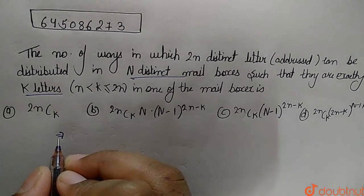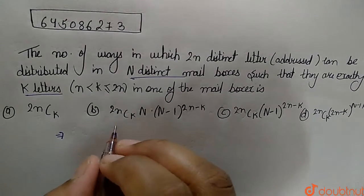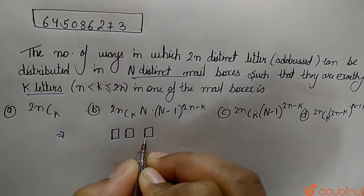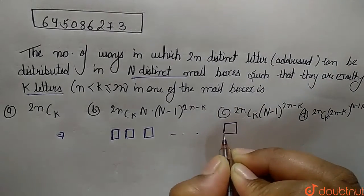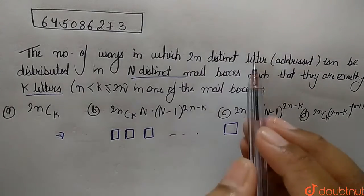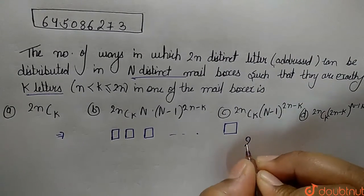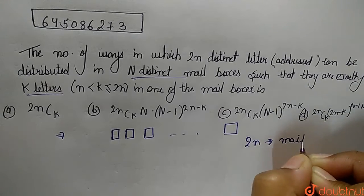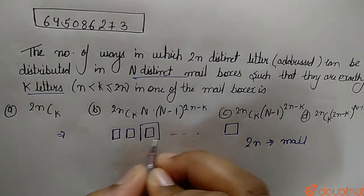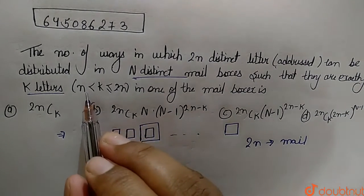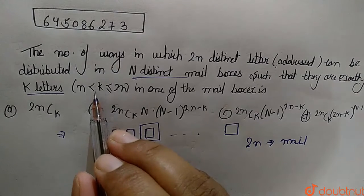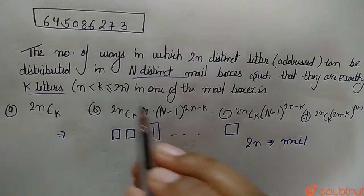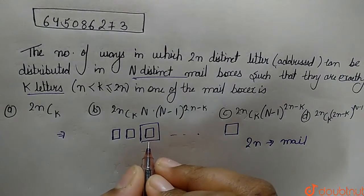So here it is given that we have 2n distinct letters, which can be one, two, three, up to n. There are 2n distinct letters and n distinct mailboxes. We are assuming it lies in between n is less than k and k is less than or equal to 2n.